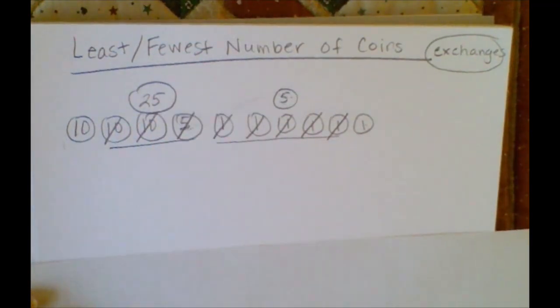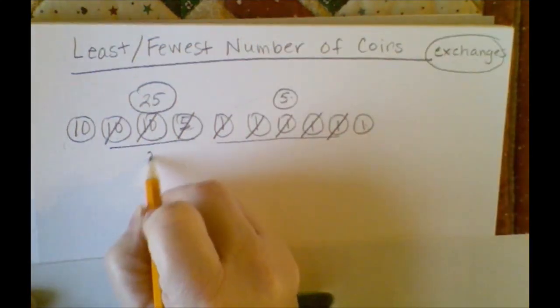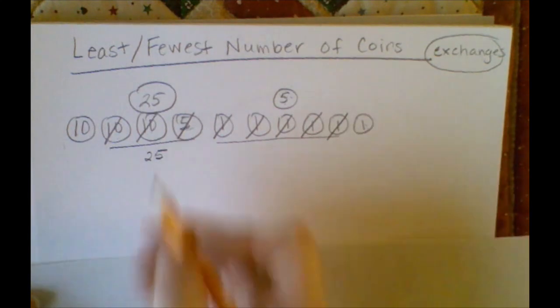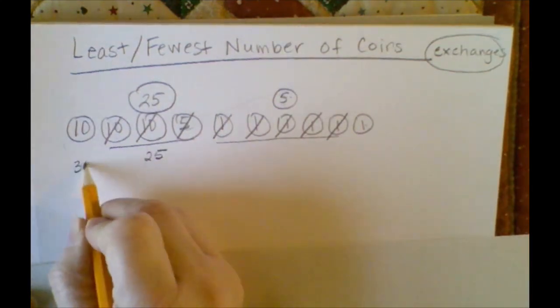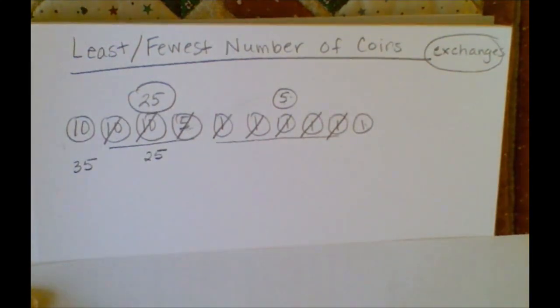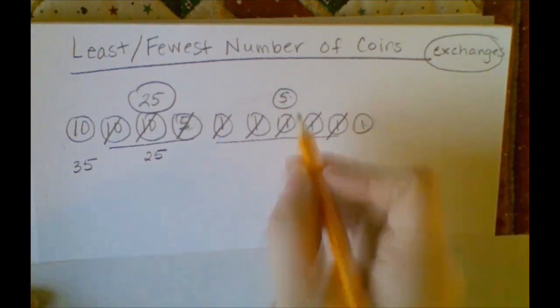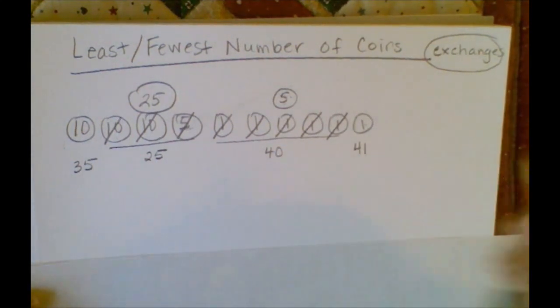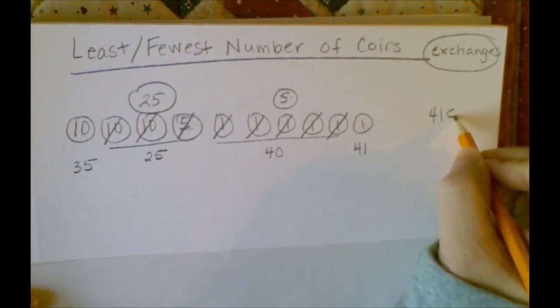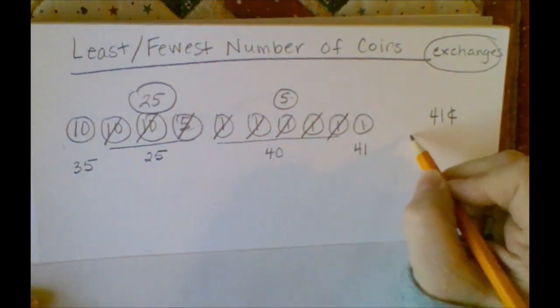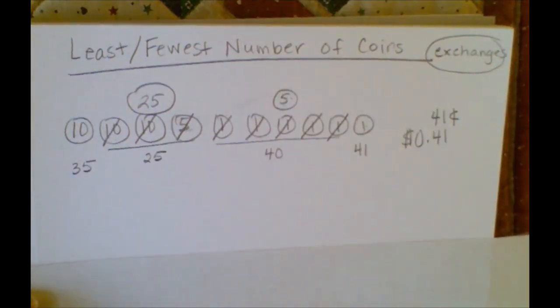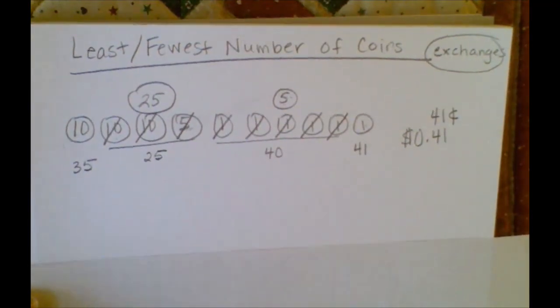I'm going to start my running total with the largest coin. So 25, and then I'm going to add another dime, so that's 25, 35, and then a nickel would be 40, and a penny would be 41. So over here to the side we need to write it with 41 cents, but remember we also need to be writing our amounts of money with our dollar sign.